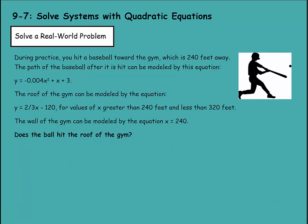Let's solve a real-world problem. It says during practice you hit a baseball toward the gym, which is 240 feet away. The path of the baseball after it is hit can be modeled by this equation: y equals negative 0.004x squared plus x plus 3. The roof of the gym can be modeled by y equals 2 thirds x minus 120 for values of x greater than 240 feet and less than 320 feet. The roof isn't going to run forever. And the wall of the gym can be modeled by the equation x equals 240 because it's 240 feet away. So does the ball hit the roof of the gym?